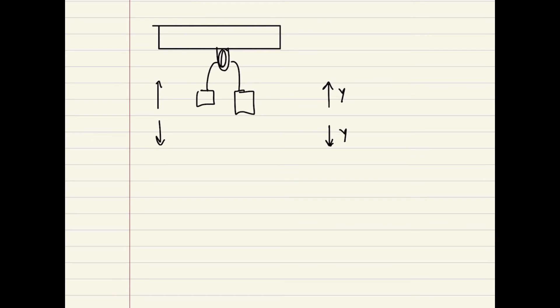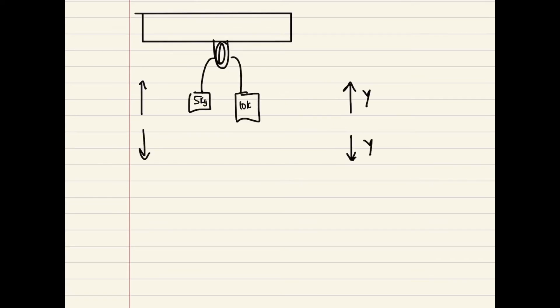Let's say I ask you a theoretical question: what forces are acting on a pulley you've never seen? Well, we have a pulley right in front of us, so let's try to understand the different forces acting on this system. We have two boxes — five kilograms of sand on the left and ten kilograms on the right. We'd expect the heavier box to go down and the lighter box to go upwards, and there's going to be a tension in the rope.